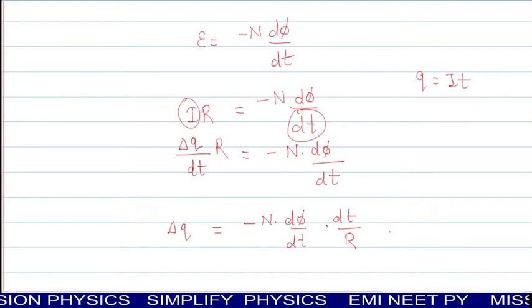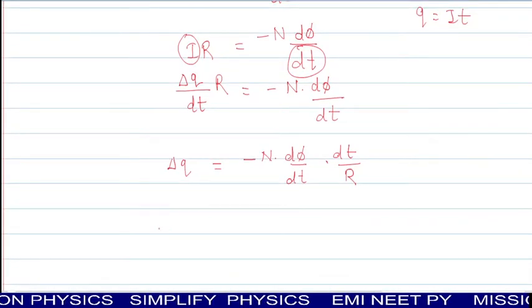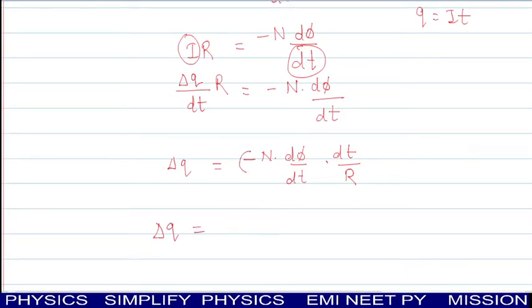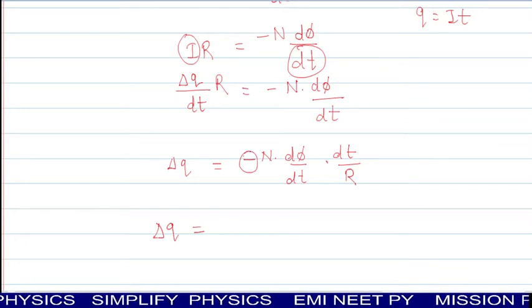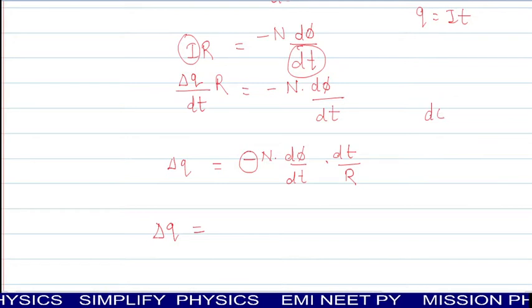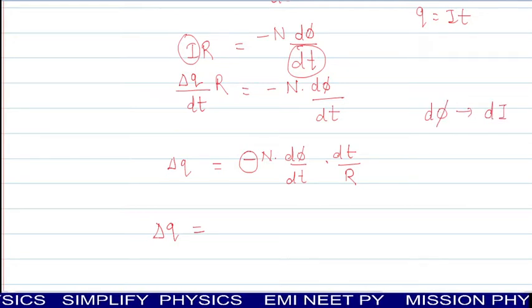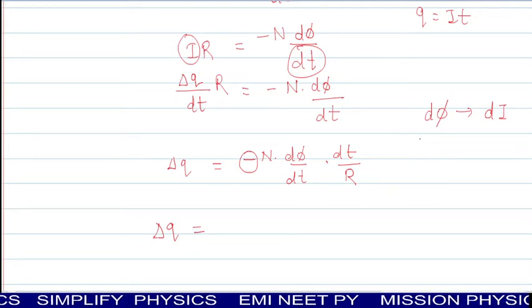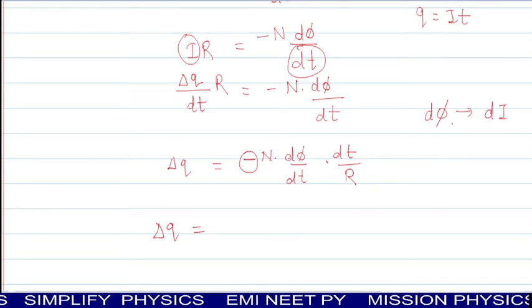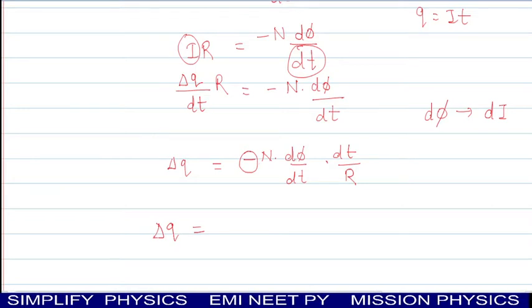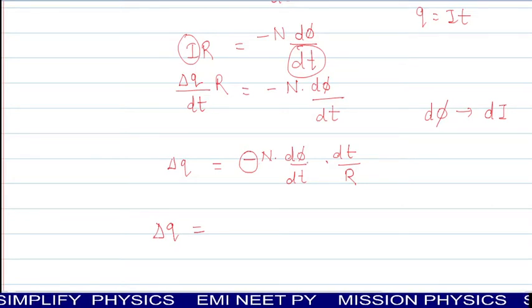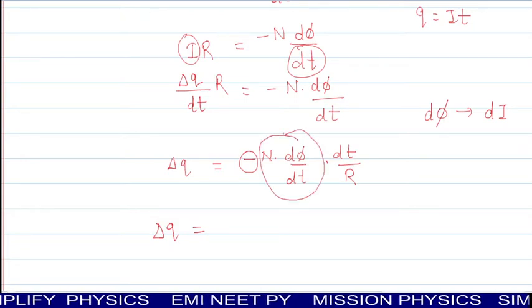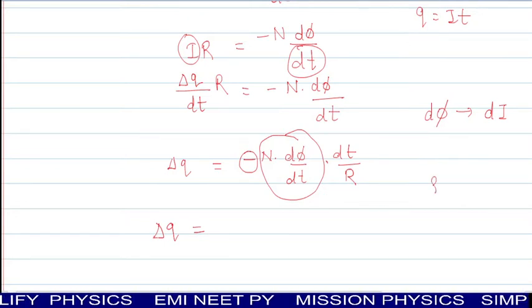We will be getting del Q equals minus N into d phi by dt into dt divided by R. Check what values you have that can be easily put. The negative sign - it opposes the change of flux. You check - flux changed due to change of current. This negative charge, that is by Lenz's law, will oppose the change of flux. It is showing the coil is also obeying Lenz's law or Faraday's third law.